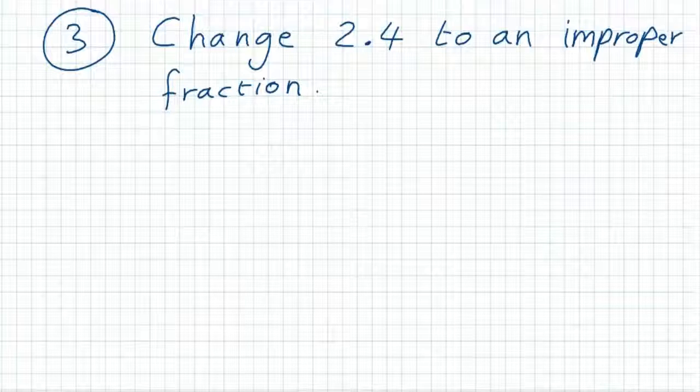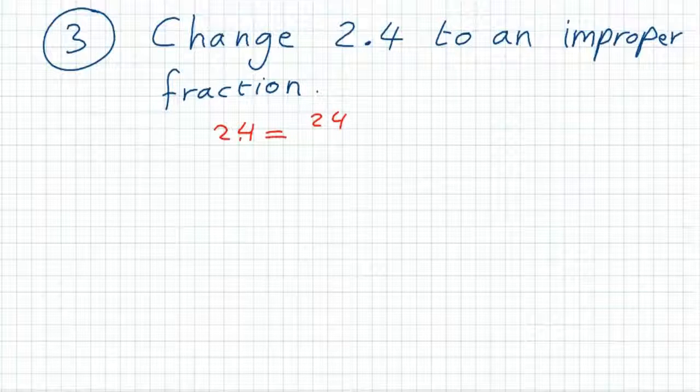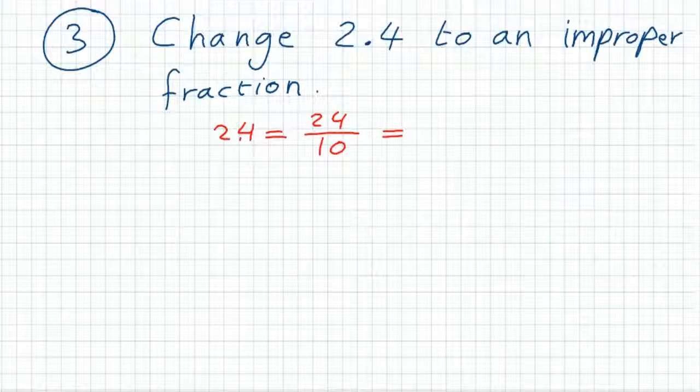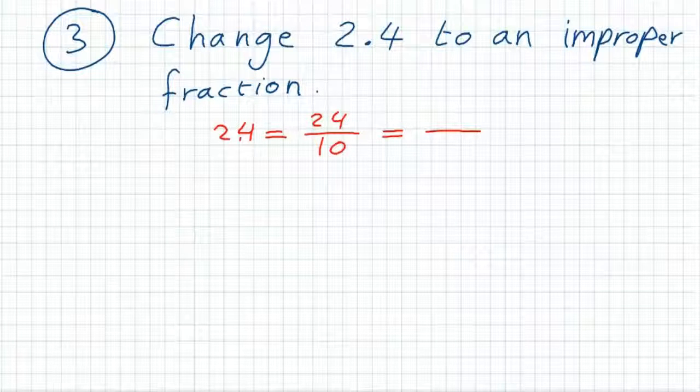And then by simplifying, dividing the numerator and the denominator by 2, we will have 12 over 5.